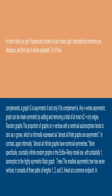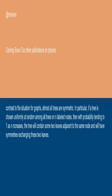Trees: the smallest asymmetric tree has seven vertices. It consists of three paths of lengths 1, 2, and 3 linked at a common endpoint. In contrast to the situation for graphs, almost all trees are symmetric. In particular, if a tree is chosen uniformly at random among all trees on n labeled nodes, then with probability tending to 1 as n increases, the tree will contain some two leaves adjacent to the same node, and will have symmetries exchanging these two leaves.